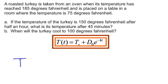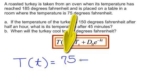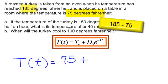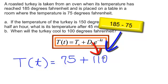The temperature of my turkey at time t is going to equal my surroundings. How warm is my house? T_s is 75 degrees plus D_0. When that turkey comes out of the oven, it's 185 degrees minus the temperature of my house, which is 75 degrees, so that will be 110 degrees. That is my D_0, e to the negative kt.